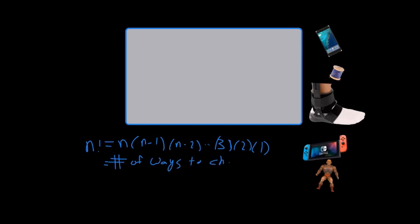Now, one way to think of permutations, as far as a definition goes, is it's the number of ways to choose objects off a table. So, n factorial, which is equal to n times n minus one times n minus two down to three times two times one. One way to think of this as the number of ways to choose n objects.